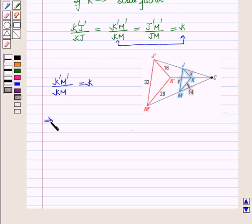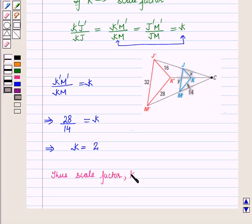Now putting these values here, K'M' that is 28 upon KM that is 14 is equal to k, and this implies k is equal to 2. Thus scale factor k is equal to 2 which is greater than 1, so it is an enlargement of the given figure.